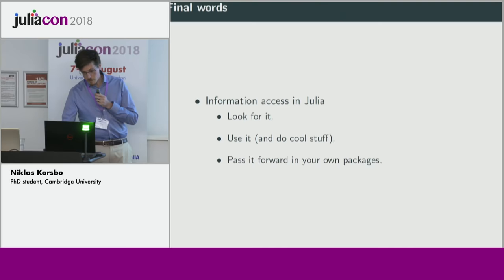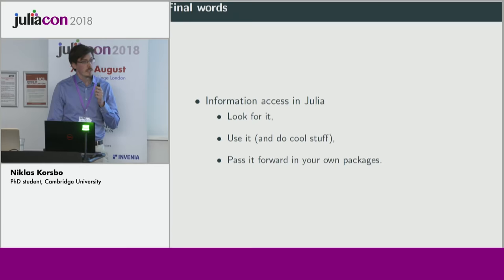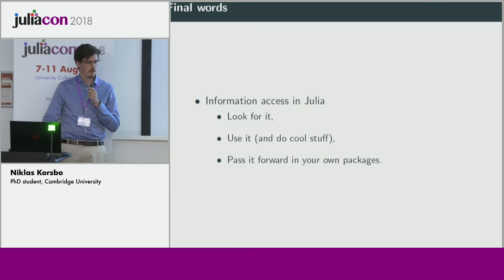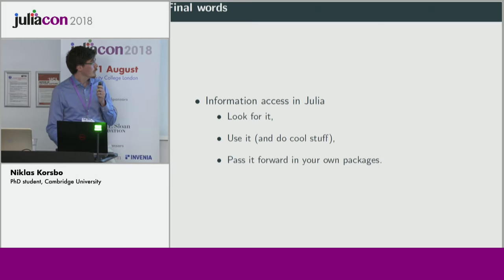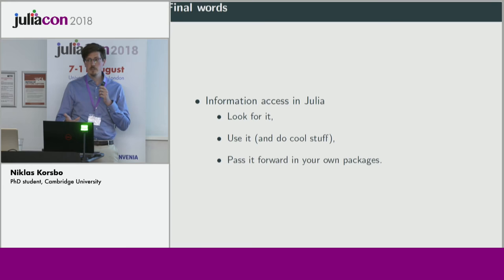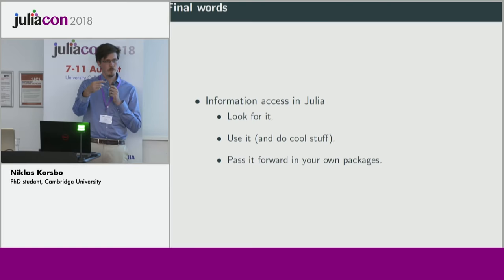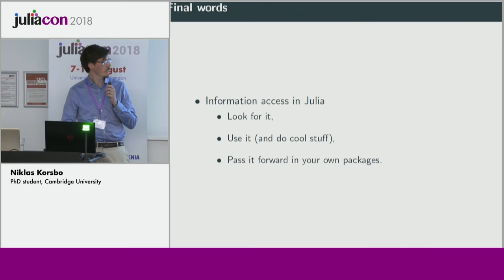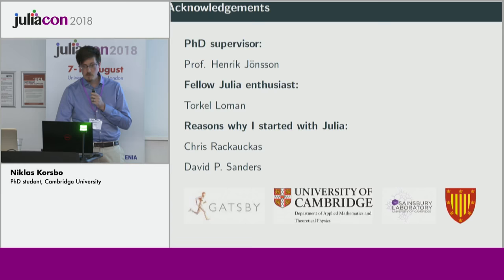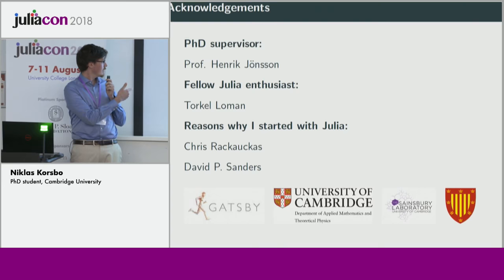So just final notes: information is usually accessible in Julia in a way that I had not imagined when I started with it — so do look for it, use it, and try to make cool stuff with it. Especially important: if you create your own package, please forward any information that you have. This entire thing with the DSLs was contingent on somebody having created a type with a field containing the correct information for me to use. They didn't know what I would use it for, but because they supplied that information I could do something with it.